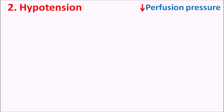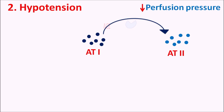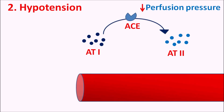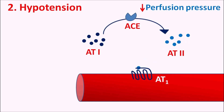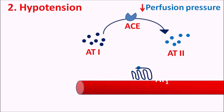The second side effect is hypotension. Normally, when perfusion pressure decreases, the renin-angiotensin system is activated. Angiotensin I is converted into angiotensin II by the ACE enzyme. Angiotensin II acts on vascular smooth muscle expressing angiotensin II receptors subtype 1 (AT1), producing vasoconstriction, which increases perfusion pressure. This is the normal physiological mechanism by which the renin-angiotensin system restores perfusion pressure.